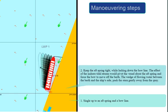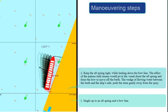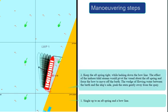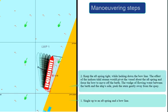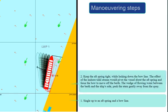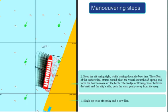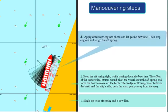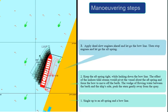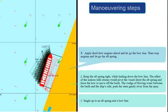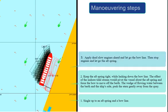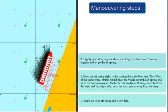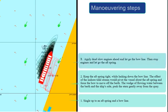The wedge of flowing water between the berth and the ship's side would push the stern gently away from the quay. Step 3: Apply dead slow engines ahead, and let go the bow line. Then stop engines and let go the aft spring.